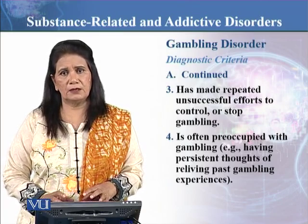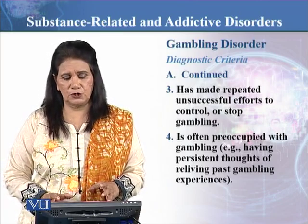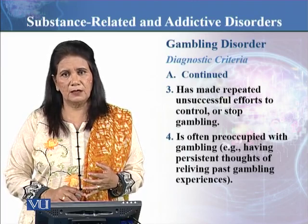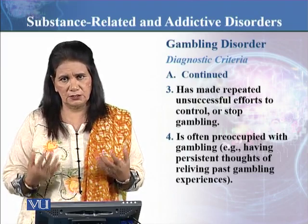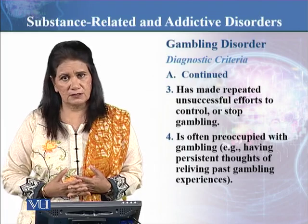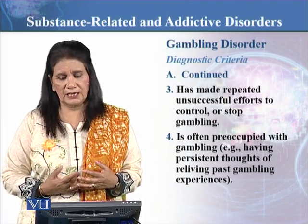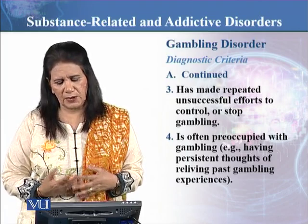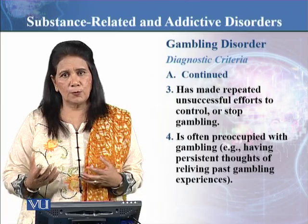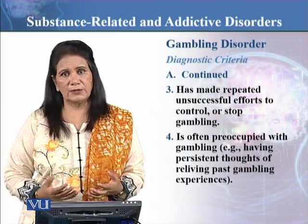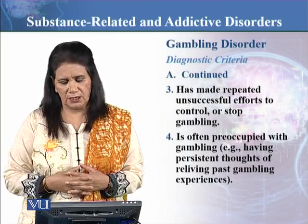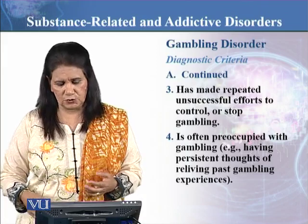The fourth symptom is that the person is often preoccupied with gambling mentally. The person has persistent thoughts about gambling — reliving past gambling experiences. Those moments where he won money, he relives those experiences again and again in his mind. Images and thoughts related to gambling keep coming to him repeatedly.